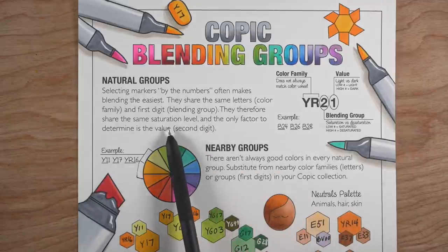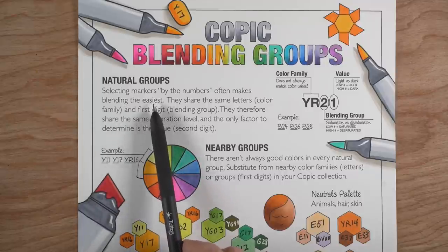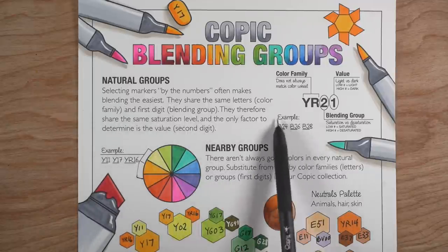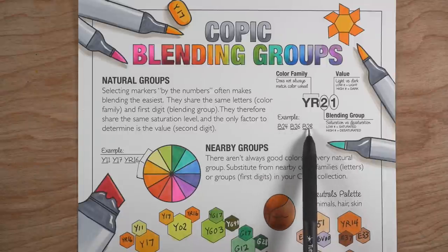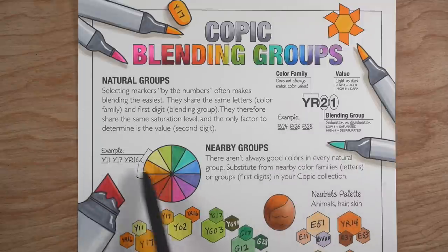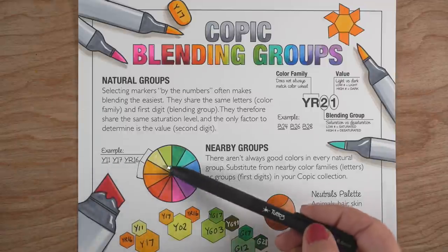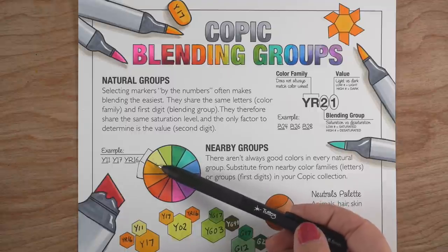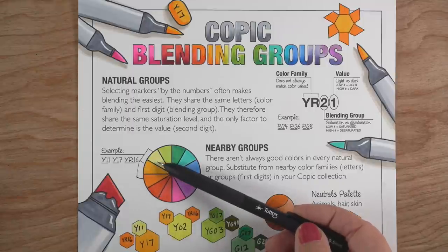There are a couple of different kinds of blending groups. In natural groups, the letter and first digit are the same, so B24, B26, and B28 form a natural blending group — you know they'll work together because they share the same saturation level and color family. But there are also cross-family groups like Y11, Y17, and YR16, which all share that first digit of one.